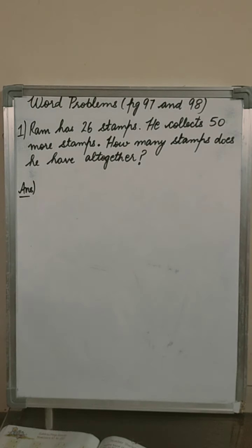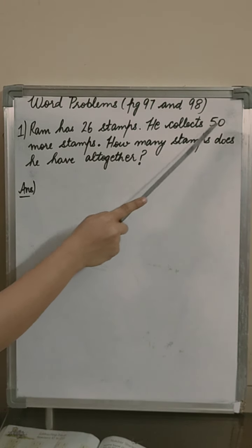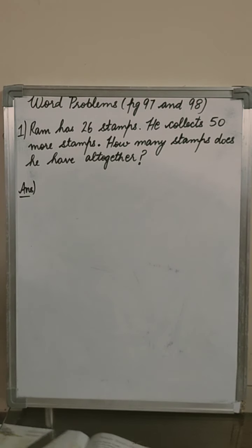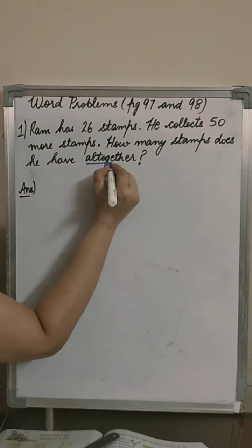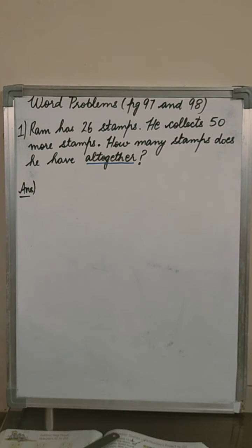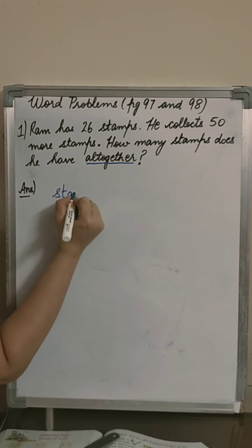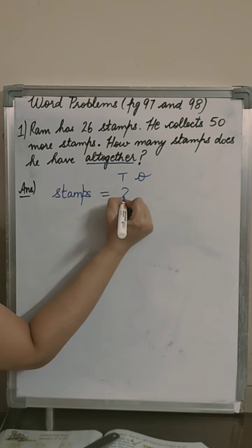Now children, come to our first question, word problems page 97 and 98. First question: Ram has 26 stamps, he collects 50 more stamps, how many stamps does he have altogether? So our keyword is altogether. How many stamps we have? 26.